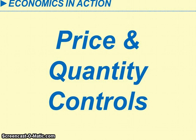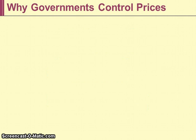This lecture discusses government price and quantity controls. Governments sometimes get involved in price and quantity control setting in markets for various reasons. While there are many arguments for these price and quantity controls, economists would counter by saying that these controls cause inefficiency in markets.